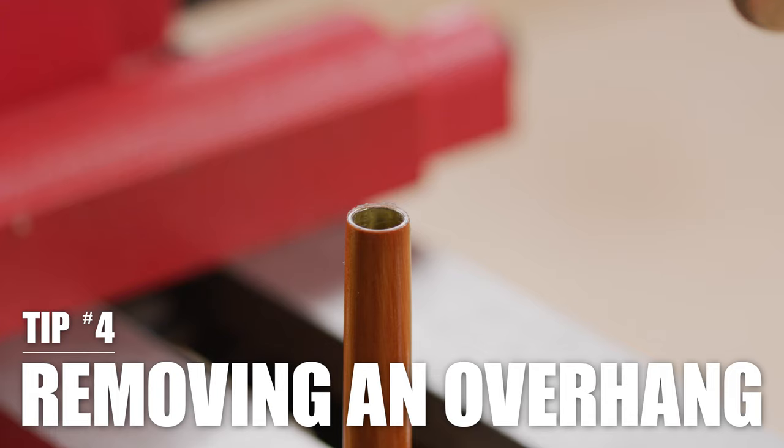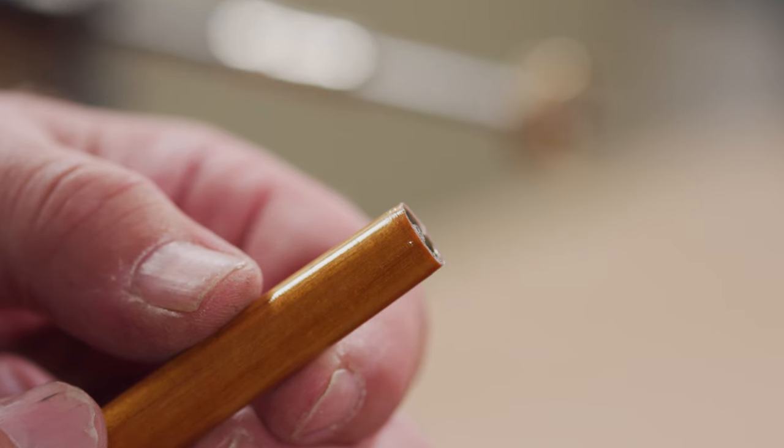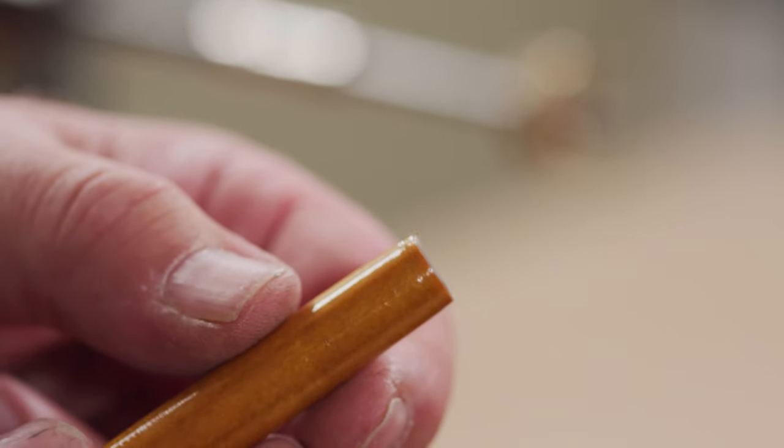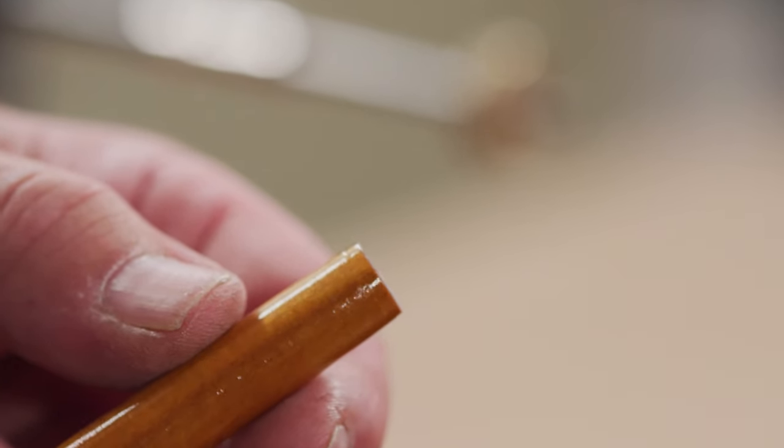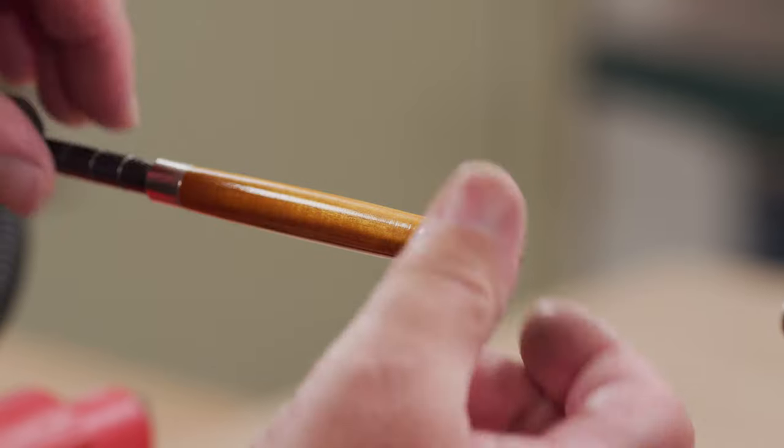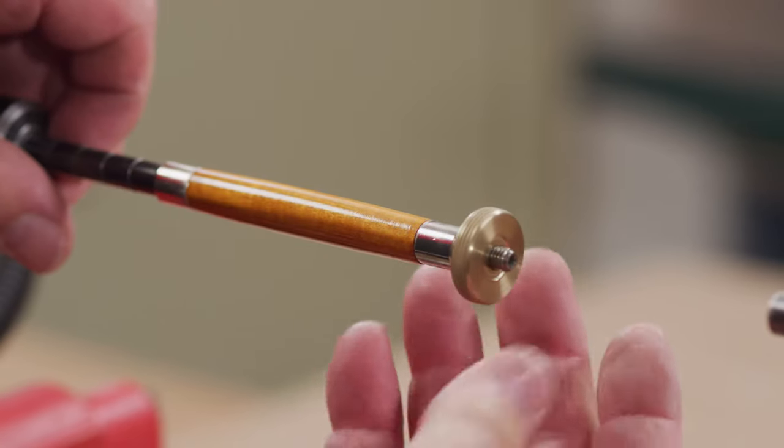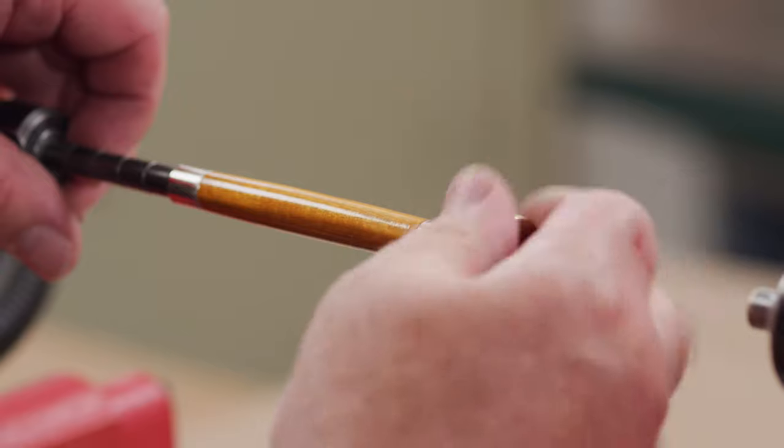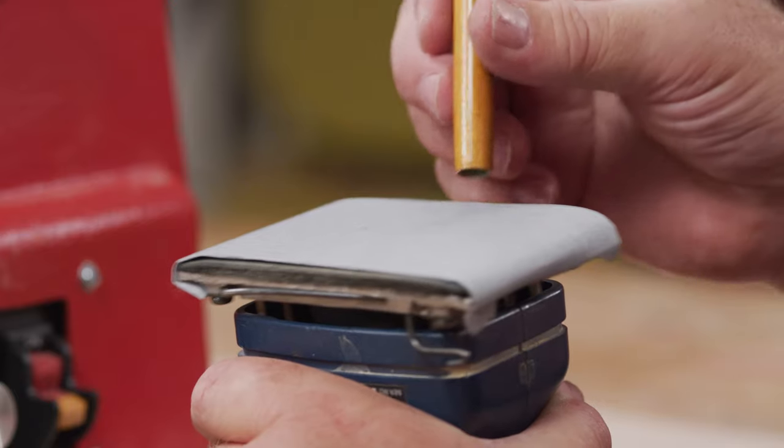No matter how careful you are, it's possible to leave a small amount of wood fibers, finish, or cyanoacrylate that overhangs the turned blank onto the adjacent bushing. Unfortunately, this can't always be cleaned up on the lathe.